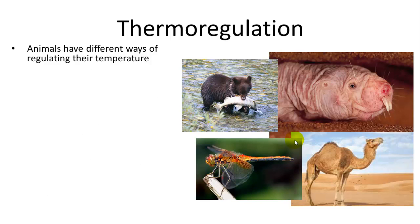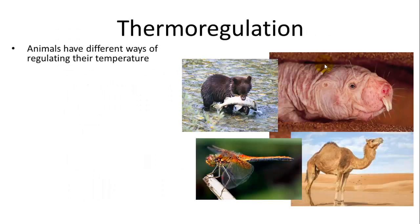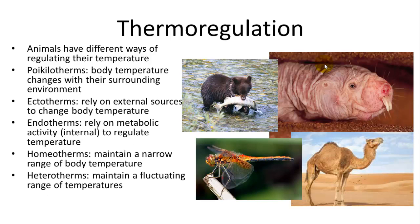Animals have different ways of thermoregulating. Not all animals rely on all of these, depending on their environment and structure. One category is called a poikilotherm, where their body temperature changes with the surrounding environment — they do not regulate their temperature at all. The only mammal known to do that is the naked mole rat, because it lives in burrows that have a very constant temperature, and so it has lost its ability to regulate its temperature.